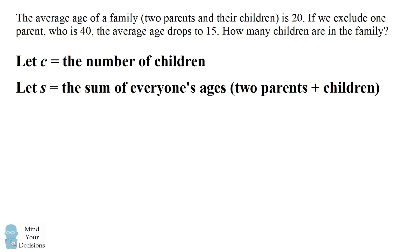We'll then denote a variable s to equal the sum of everyone's ages. This is the sum of the two parents' ages plus the sum of all the children.